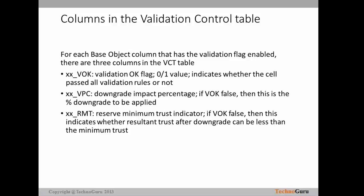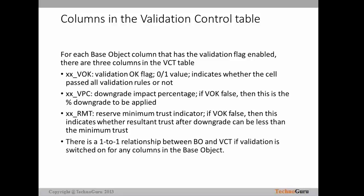The third column is RMT, the reserved minimum trust indicator. If VOK is false, the value of the RMT column has a dependency on the VPC column. This indicates whether the resultant trust after the downgrade can be less than the minimum trust — that is, to calculate the reserve minimum trust. So these are the three columns enabled whenever you enable any base object column for the validation flag. There is a one-to-one relationship between the base object and the VCT table if validation is switched on for any column.